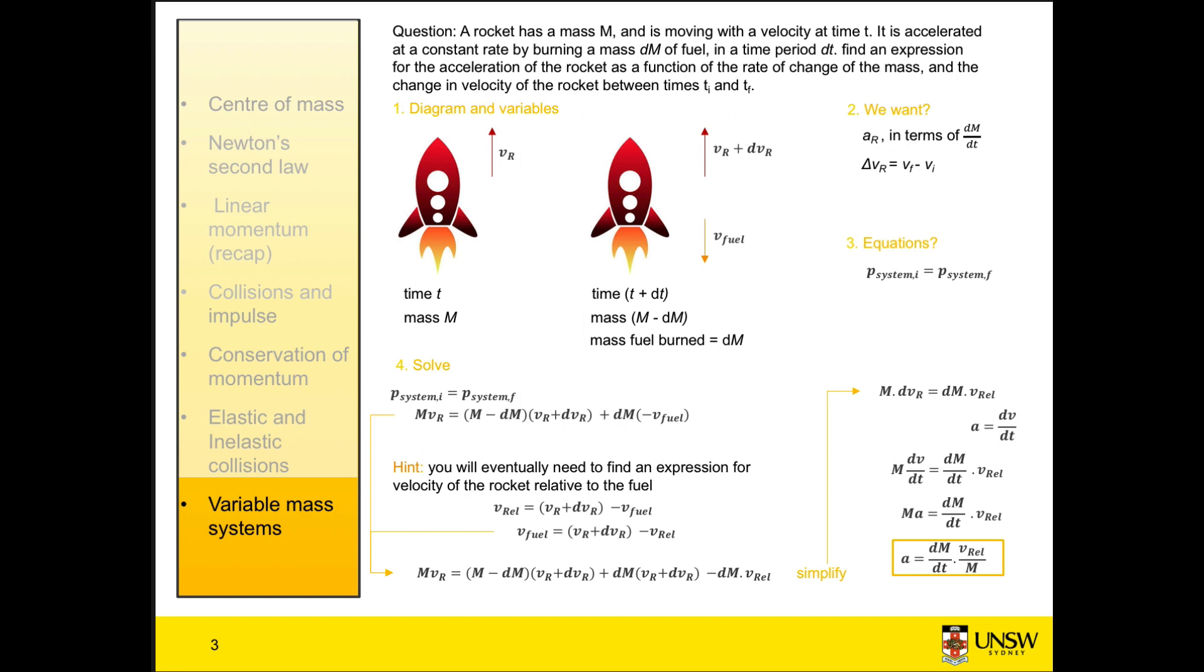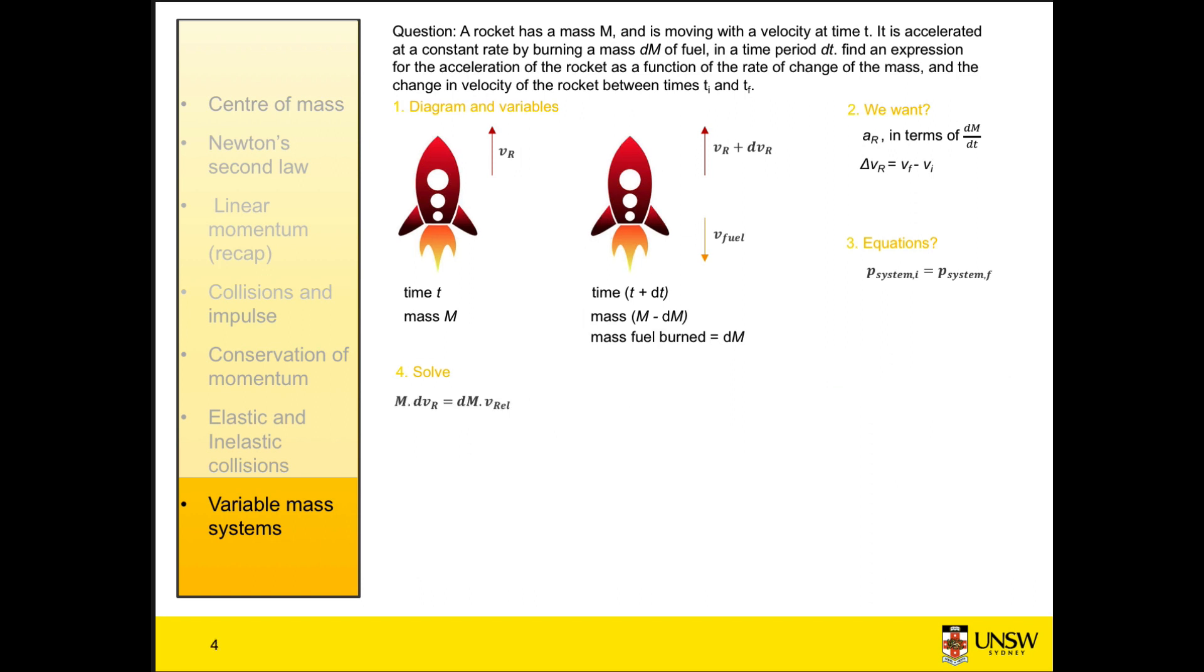In part two, we're asked to find the change in velocity between initial and final times. I'll look through my working to find an equation that gives me something to do with the change in velocity, and it's this one here. In this equation, a small change in velocity is related to a small change in mass. I'll rearrange to make the change in velocity the subject.